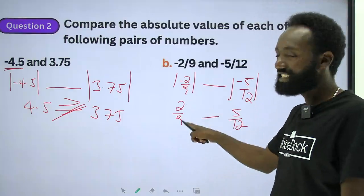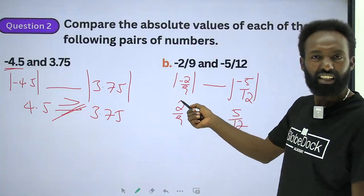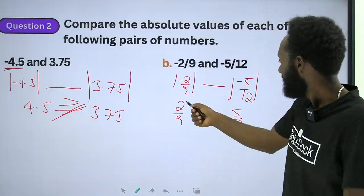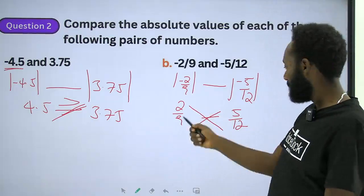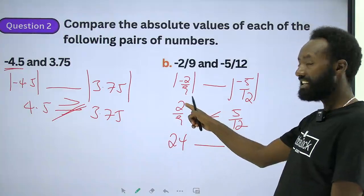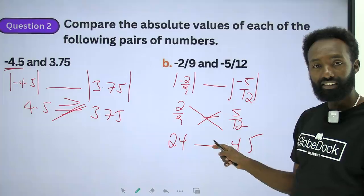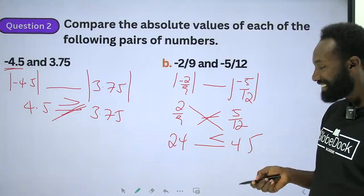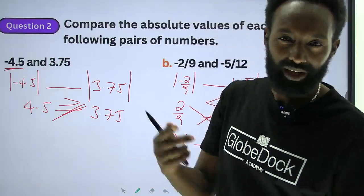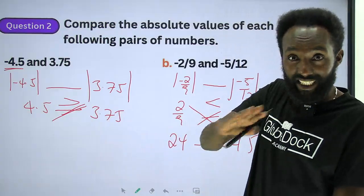To compare the fractions, we use the cross-multiplication technique. You determine the numerators and denominators. Nine times five gives us 45, and we compare using cross products. This is the fraction comparison method — you cross multiply to determine which fraction is larger.